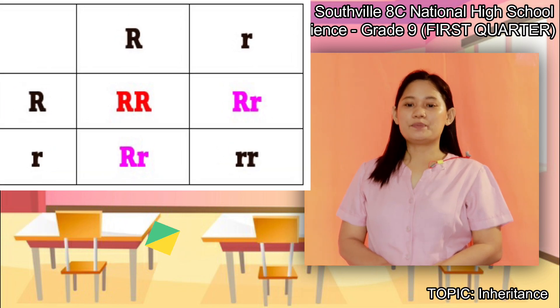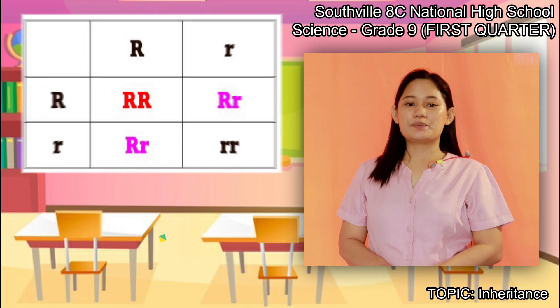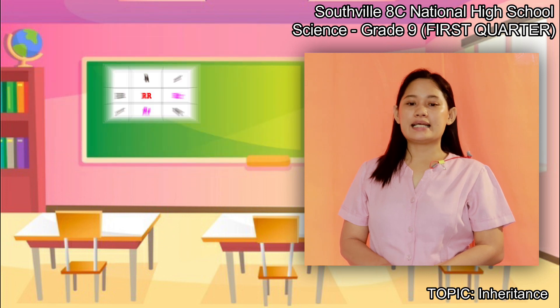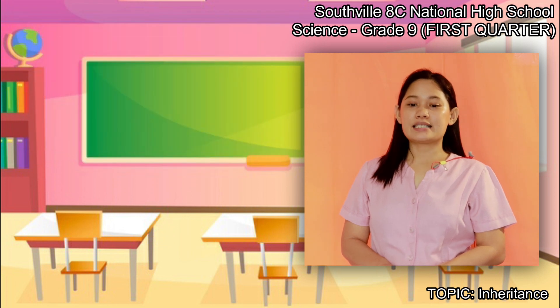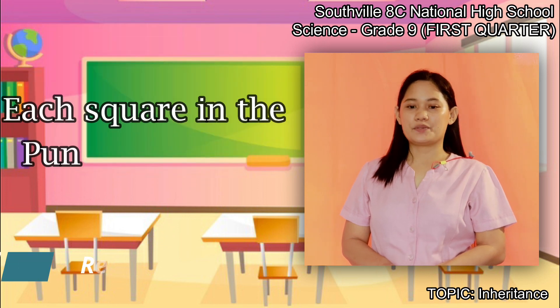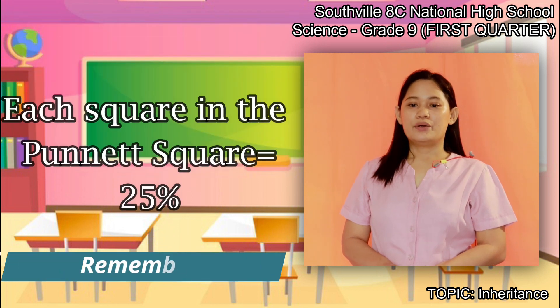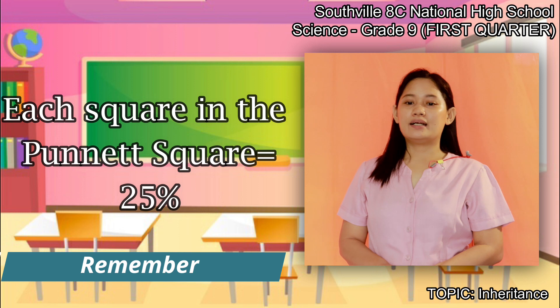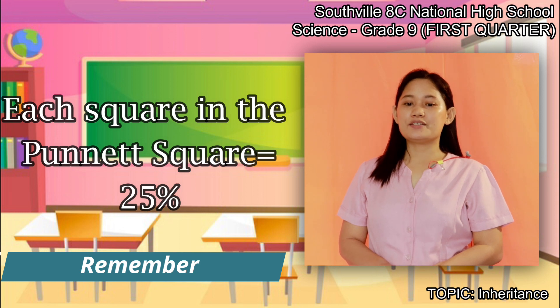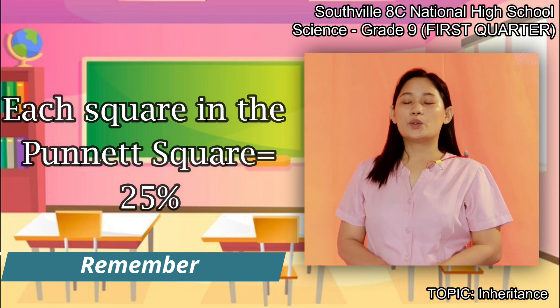The offspring phenotypes' probability is the same as the genotypes. Remember that each square in the Punnett square is equal to 25%.